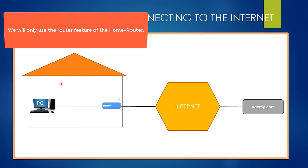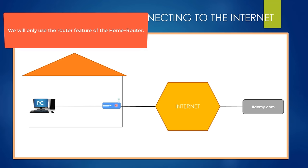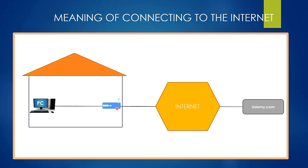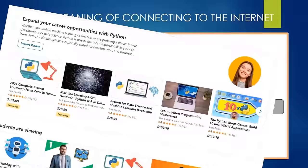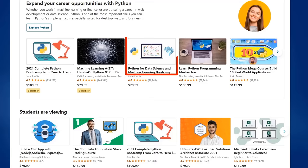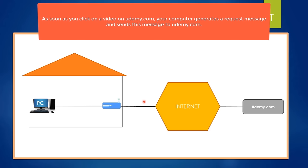You have learned that the connection to the internet is determined by whether the related computer can send a packet to the internet or not. Let's say you are turning on your computer and entering udemy.com on your favorite web browser, then you click on the video you are watching right now. As soon as you click on one of these videos, your computer creates a packet and sends this packet to udemy.com over the internet.